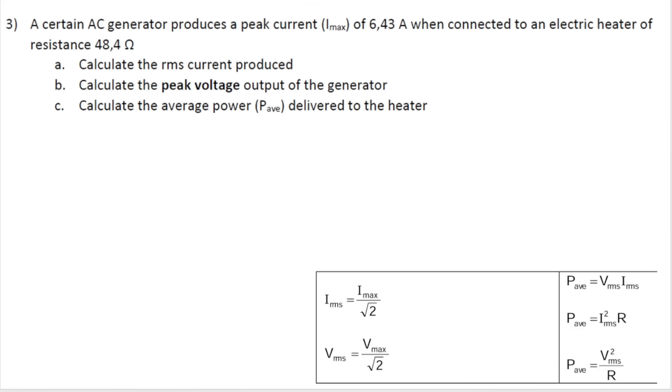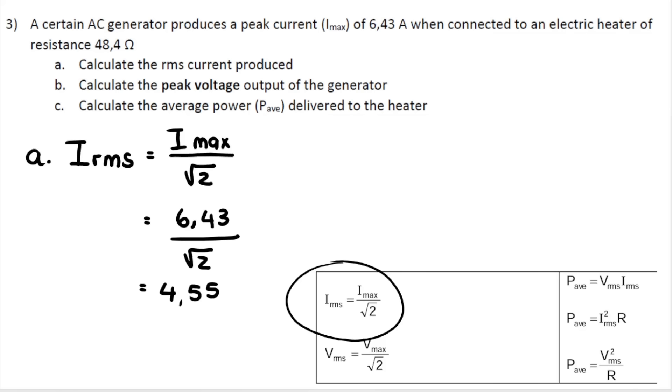Then question three. I hope you're trying these by yourself first. So it says a certain AC generator produces a peak current, I max, of 6.43 amperes when connected to electric heater. And now they give you the resistance of the heater. First question, calculate the RMS current. So they're giving me the maximum. They want the RMS. I'm going to make use of this formula. So you write your blank formula down first. You substitute your values into 6.43 divided by square root 2. I get 4.55. Remember, that's measured in amperes.